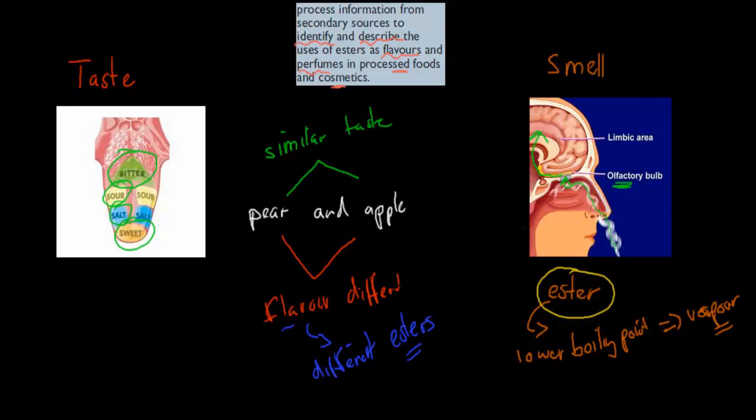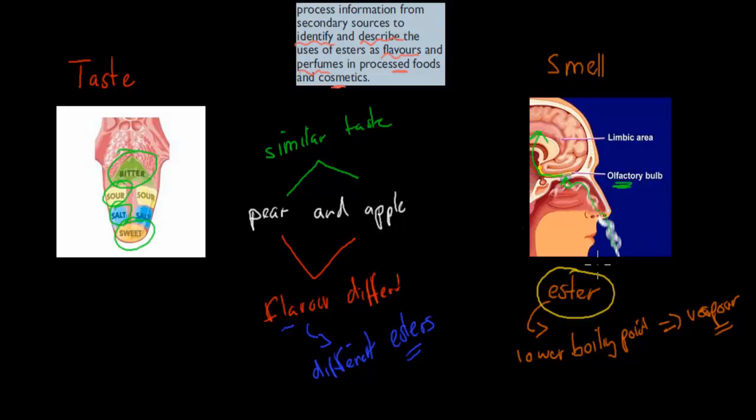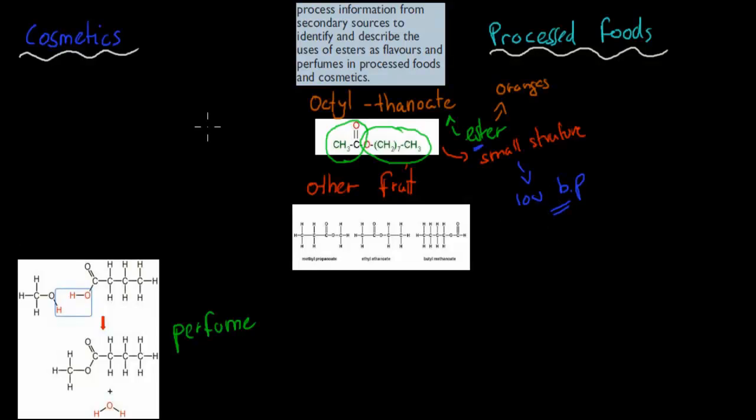So what happens if we have a short-chained ester, an ester which is quite small? Well, it has a low boiling point. And that makes it actually be in vapor form, and therefore it can rise and cause a smell sensation. And again, that smell sensation is useful because if we combine smell and taste, we get flavor. This is one of the actual esters that's used in oranges, that we find in oranges.